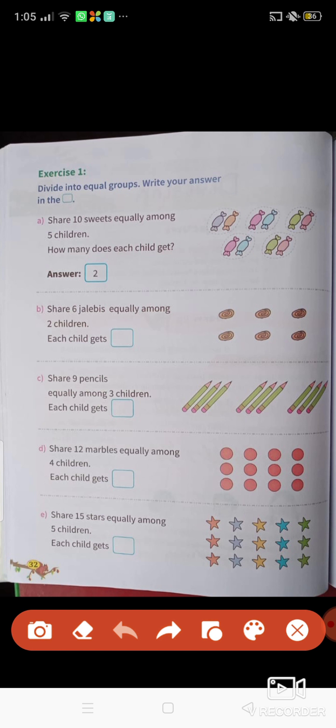Share 6 jalebis equally among 2 children. So here, among 2 children 6 jalebis we have to share. 1 child will get 3 and 1 child will get 3. 3 2's are 6, 2 3's are 6. So the answer will be 3.